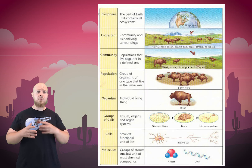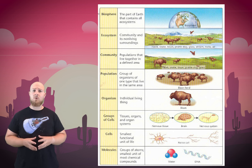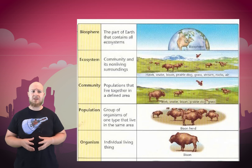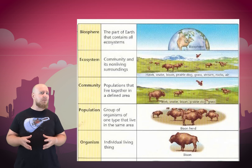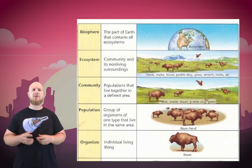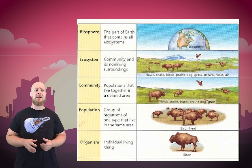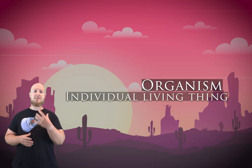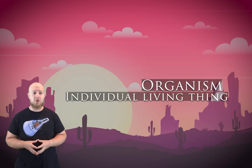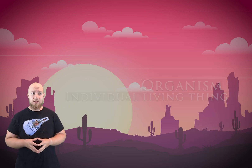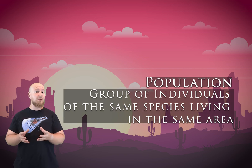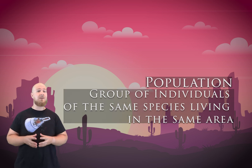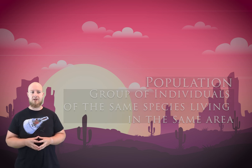Living things are studied at a few different levels of organization. In environmental science, we mainly focus on the last few levels you see on the chart. An organism is an individual living thing. A population is a group of organisms of the same species that live in the same area.